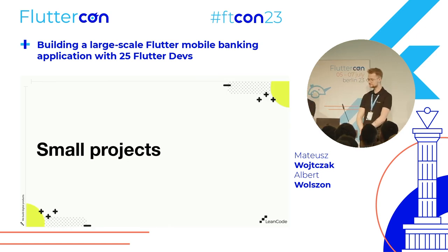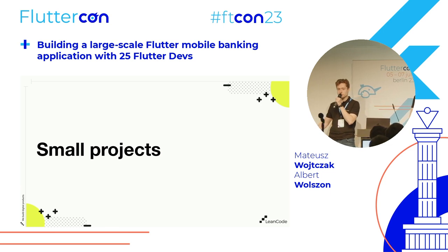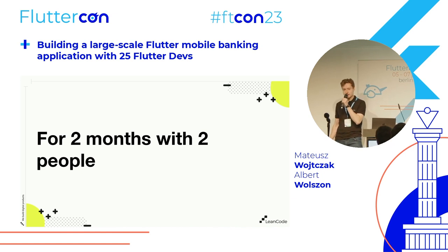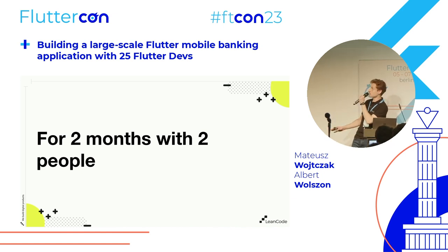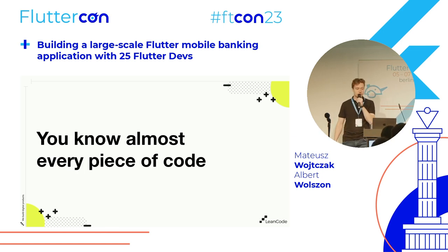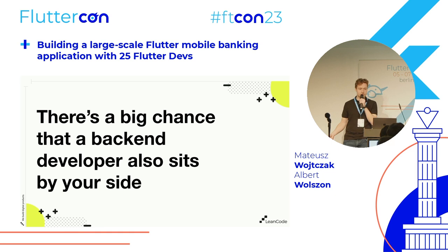So first let's set some terms just to be clear. What does it mean for a project to be small? For us, approximately a small project is one that you can do for two months with two developers. What's special about this class of projects is that you know almost every piece of code in the code base, and you have similar business knowledge to your colleagues. There's also a good chance that a backend developer sits by your side.